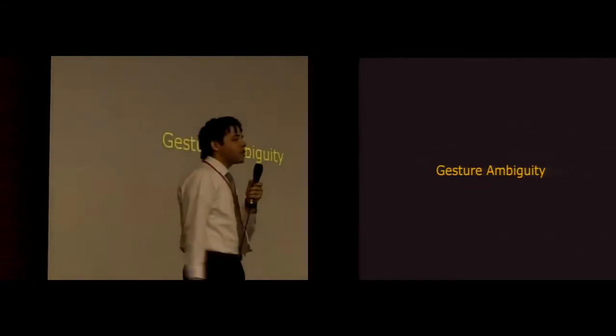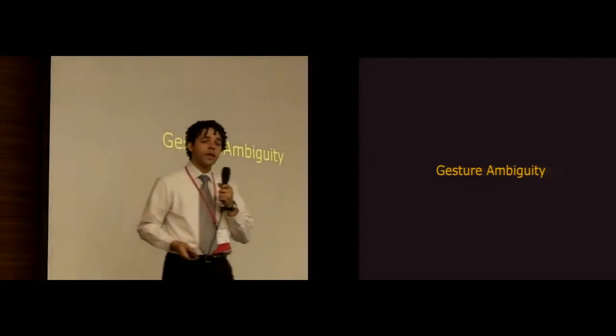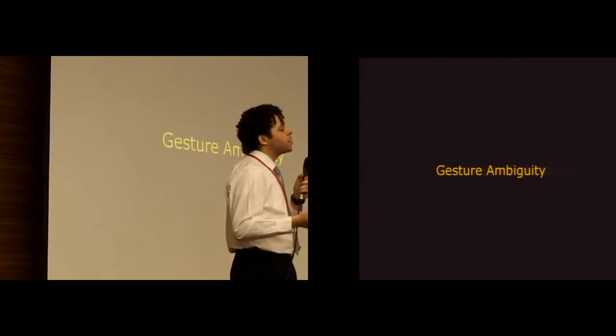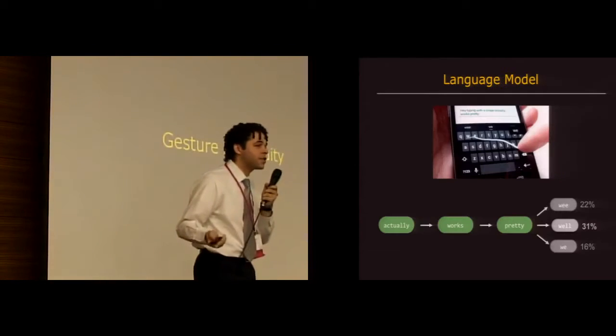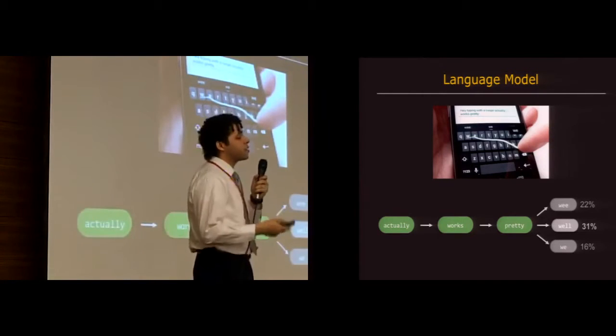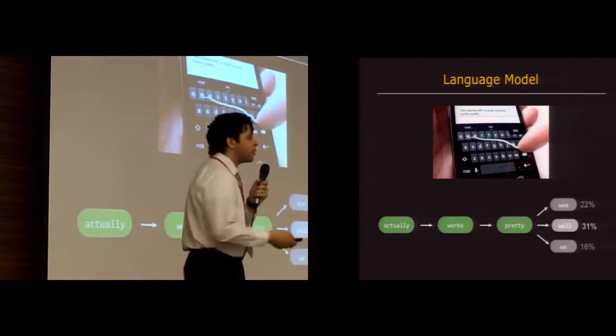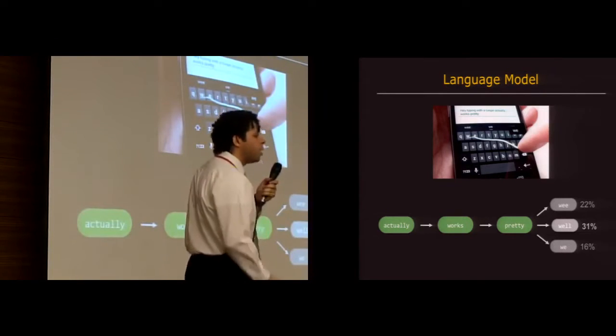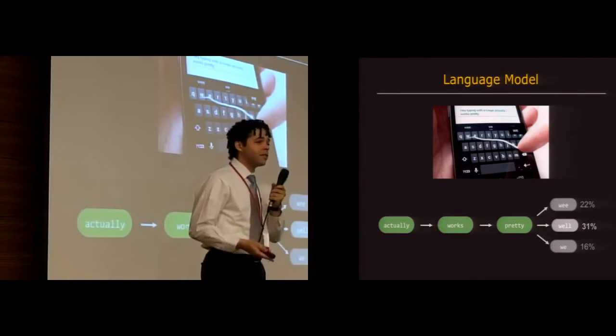So clearly, gesture ambiguity is a big problem. But if you look at current systems and what they do to rectify the situation, they basically just leave the ambiguous word gestures intact and use what's called a language model to predict what you're typing after the fact by looking at the probabilities of the different word sequences you're about to form. But a language model isn't enough, and here's why.